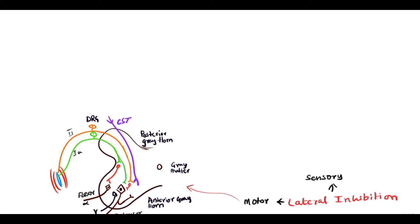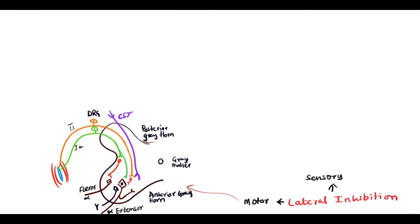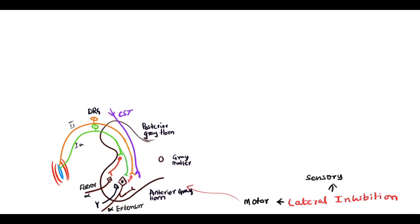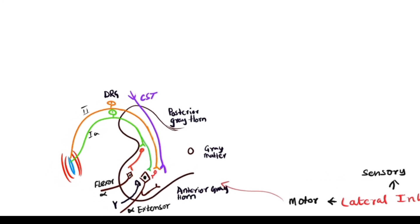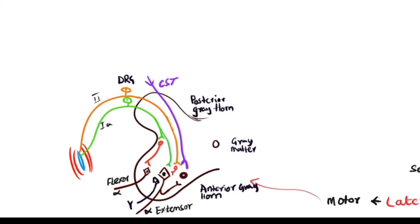Let us see how lateral inhibition regulates or modulates the outflow of the anterior horn cell of the spinal cord in the motor system. We have alpha extensor and alpha flexor motor neurons as well as gamma motor neurons in the anterior horn cells. One of the alpha extensor motor neurons gives off a collateral fiber which further ends on one interneuron. This interneuron further gives off efferent inhibitory fibers to the same alpha motor neuron and neighboring alpha flexor motor neuron and even gamma motor neuron.